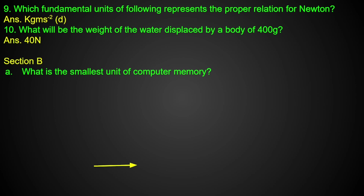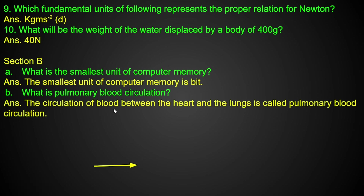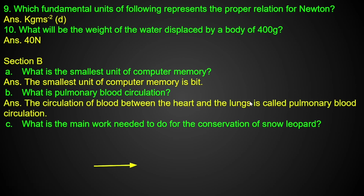In Section B: What is the smallest memory unit? Bit is the smallest unit. What is pulmonary blood circulation? Pulmonary blood circulation means circulation between the heart and lungs.